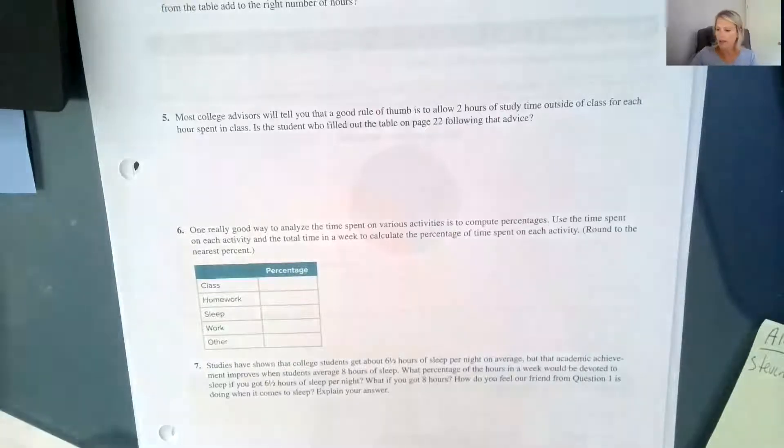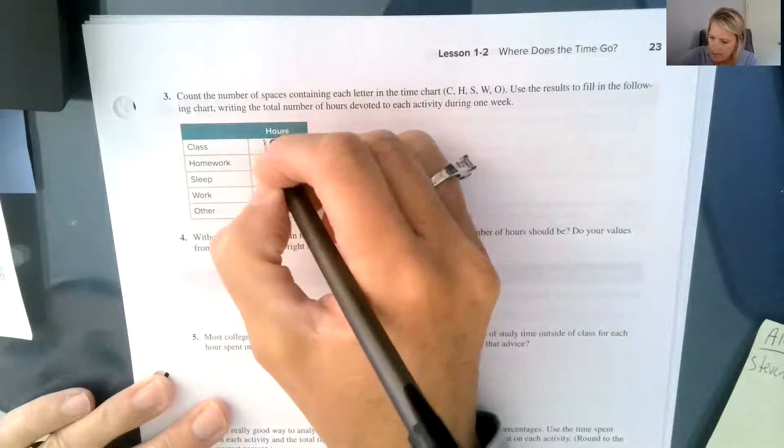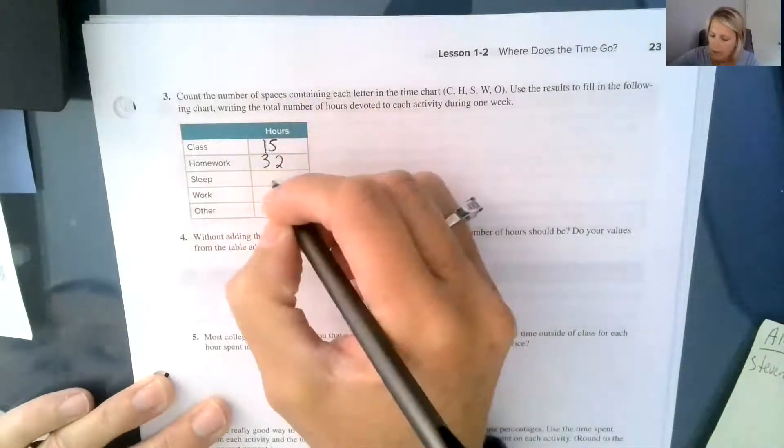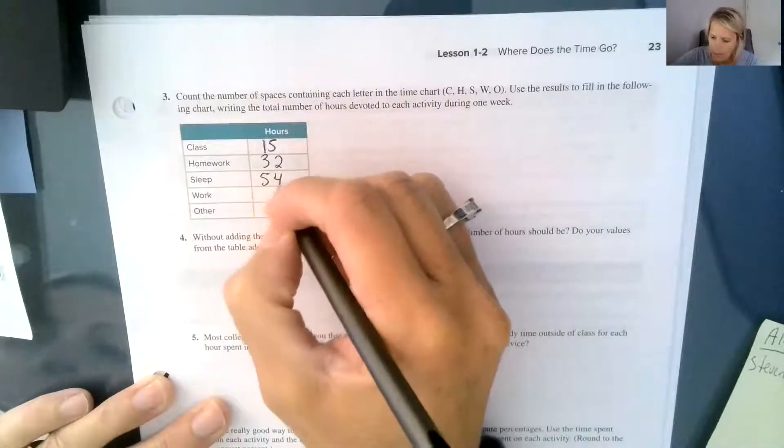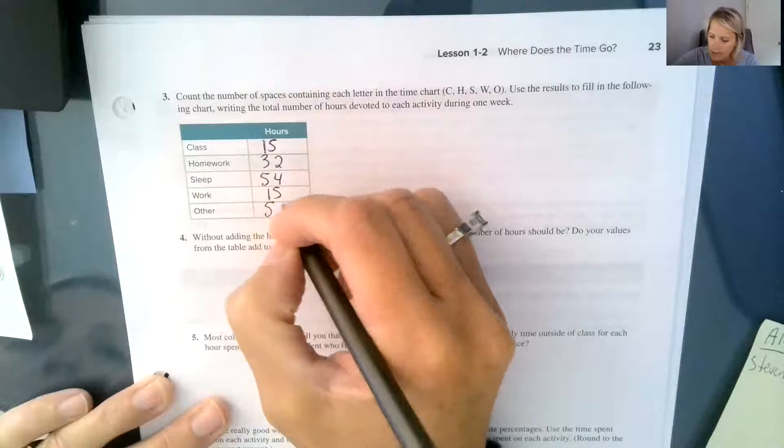They are the hours spent on class tallied up to be 15, and then 32 for homework, 54 for sleep, 15 also for work, and 52 for other.